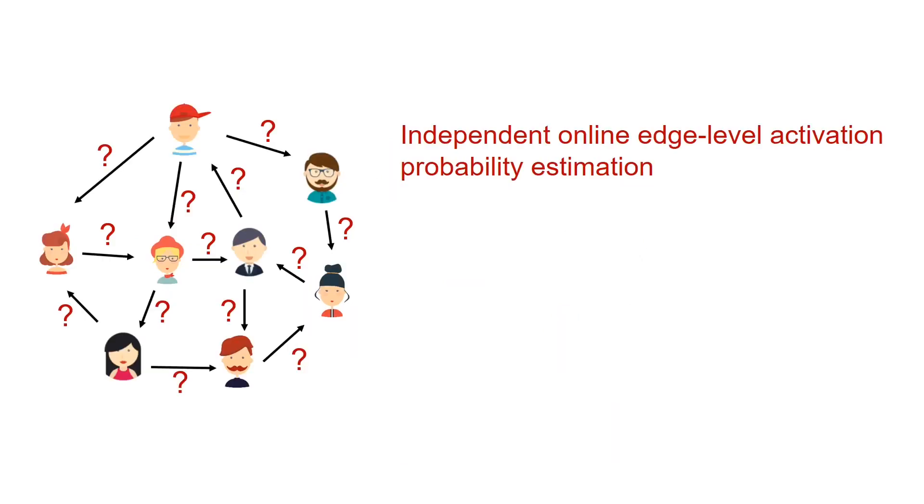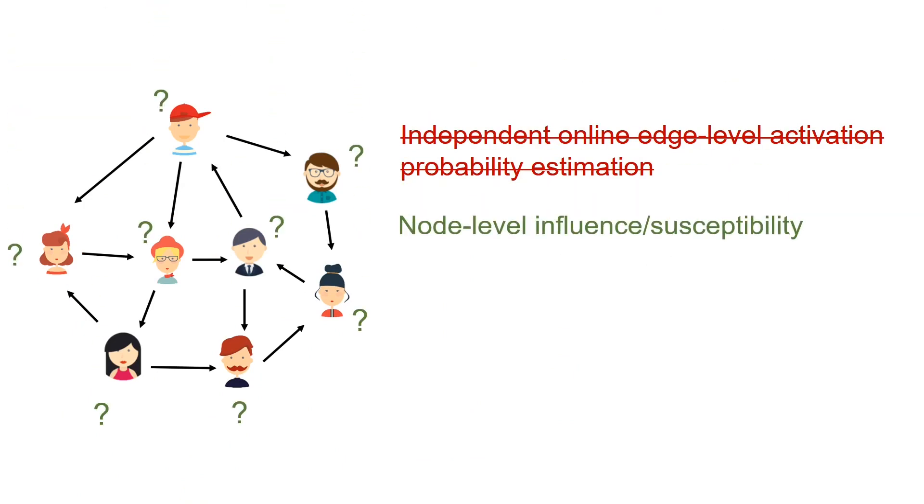By modeling the network assortativity, independent edge-level activation probability estimation is no longer needed. Instead, the abstraction of node-level influence and susceptibility imposes a low-rank structure of the influence network, based on which we propose an online factorization bandit learning solution, which can greatly reduce the sample complexity during this online learning process.